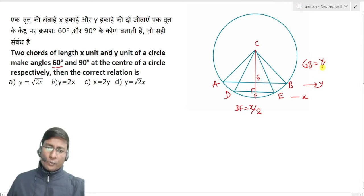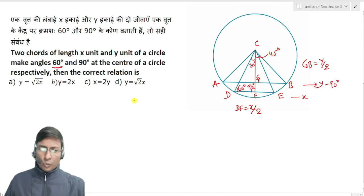Now the information given is that the x chord makes a 60 degree angle, so angle DCF will be simply 30 degrees. If this is 30, then this will be 60 degrees. And you're given that the y chord subtends 90 degrees at the center, so this angle is 90 degrees, which means each half angle is 45 degrees.